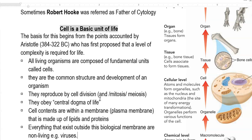All living organisms are composed of fundamental units called cells. Every organism will have a fundamental unit referred to as cells. They are common in structure and development of an organism — their structures and development are common across all organisms. Cells reproduce by two means: mitosis and meiosis.